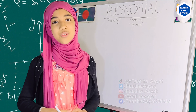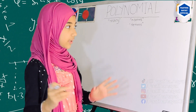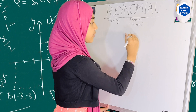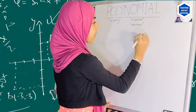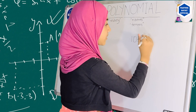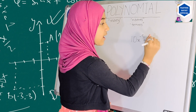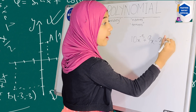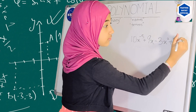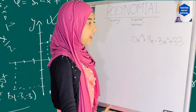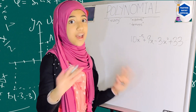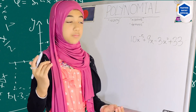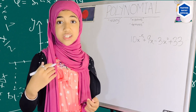So polynomials actually mean 'many terms,' and they really do have many terms — you will see why when I give you the equation. Let me write an equation first. Let's say for example we have 10x to the power minus 5, plus 9x, minus 3x squared, plus 33. Now this is actually not a polynomial.